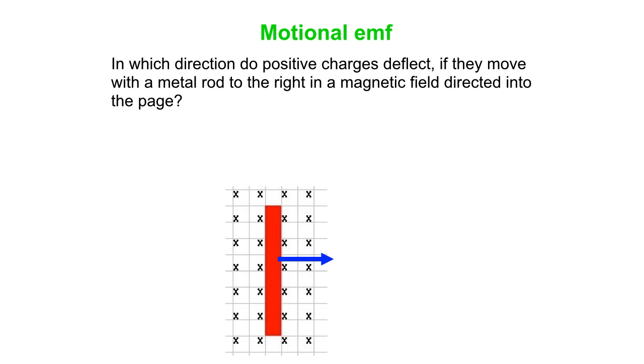So here's a rod moving to the right through a field, and the field is into the page. The rod is the red thing. The blue vector is the velocity. So here we see the velocity directed to the right. The length of the rod is up and down, and the magnetic field is into the page.